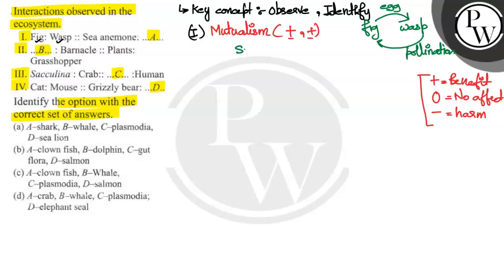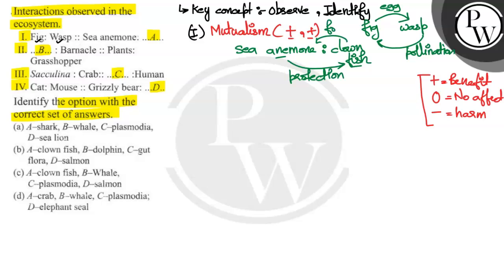Next, here we have given a sea animal. The sea animal shows a mutual relationship with clownfish. Clownfish shows a mutualistic relationship where the sea anemone provides protection to the clownfish, and in other words, the clownfish provides food to the sea anemone. The clownfish rests on the sea anemone's back. So, the first answer for our answer is clownfish.